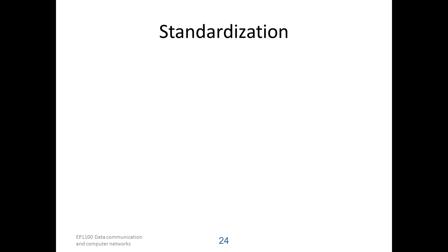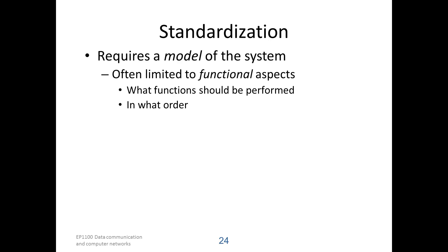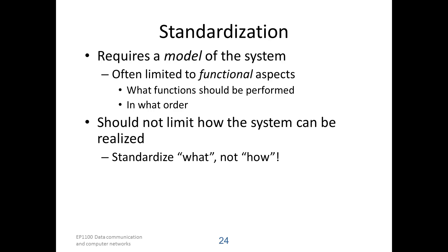In order to standardize a system, we must model it. We need to abstract some part of a system. It's often limited to the functional aspects of the system, so we define what functions should be performed and in what order they should be performed. We should not limit how the system can be realized — we should standardize what it should do, not how to do it. So that when new technology comes, or when better solutions are found to functions, they can be incorporated into the standards and not render them obsolete.